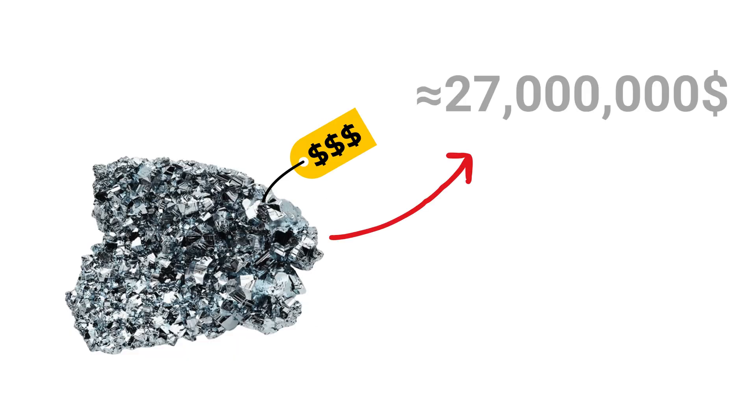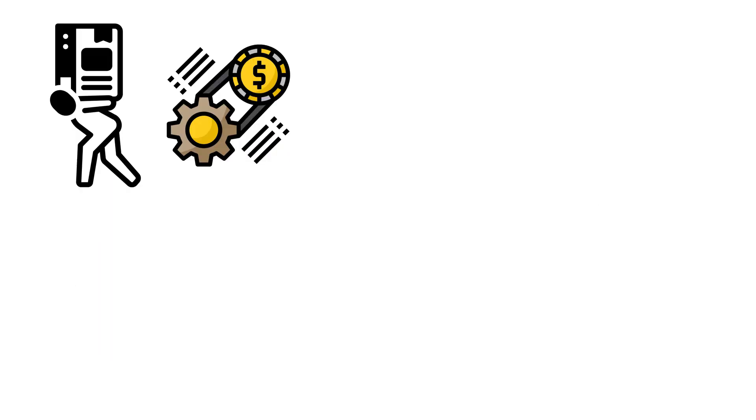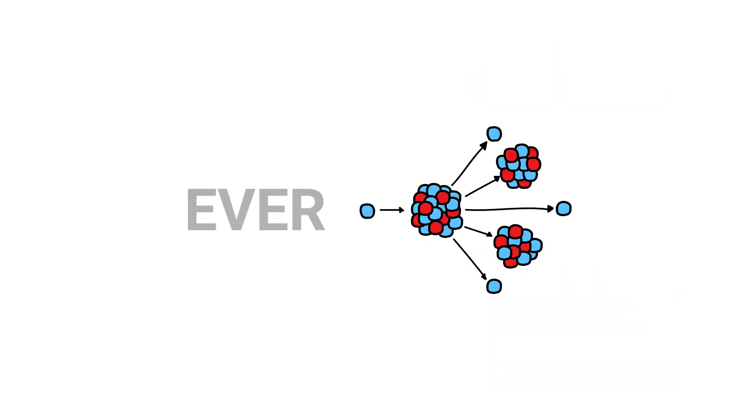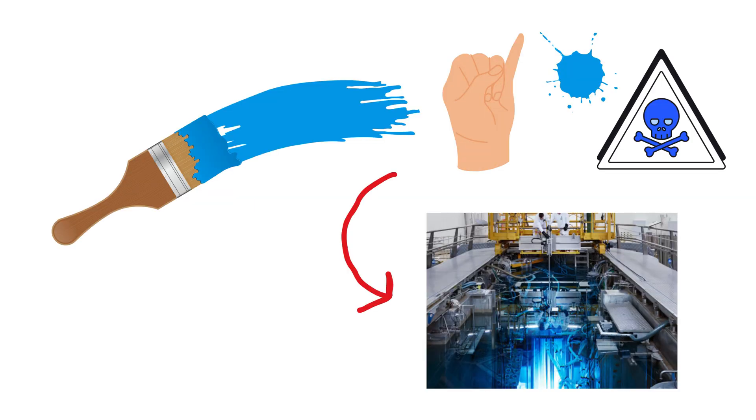And it costs around $27 million per gram. This astronomical production cost and its fleeting existence make Californium one of the most fascinating and expensive substances ever synthesized, illustrating both the promise and the peril of nuclear technology.